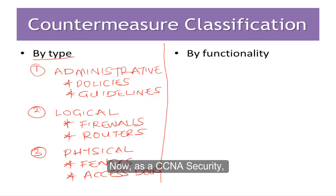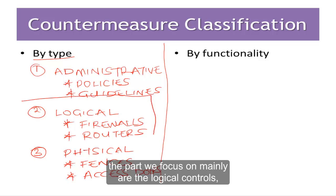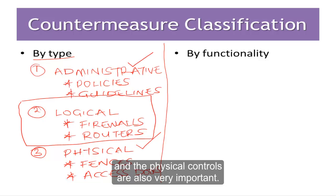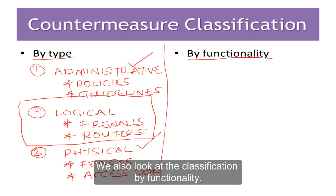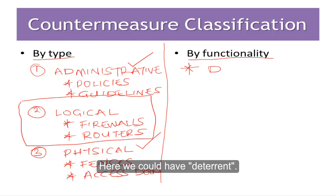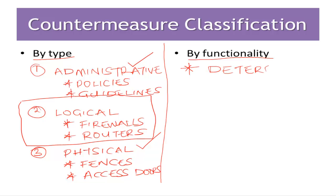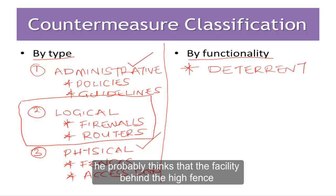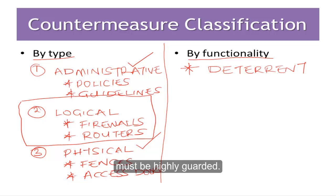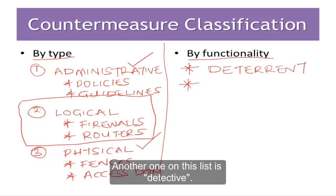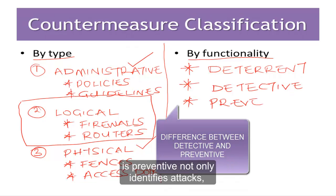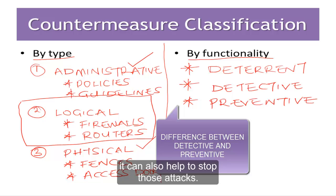As a CCNA security professional, the part we focus on mainly is logical controls, but as you go on in your security journey you will find that administrative and physical controls are also very important. We also classify countermeasures by functionality. Here we have deterrent — this discourages attacks, for example when someone sees a high fence they assume the facility is highly guarded. Next is detective, which helps to identify attacks. Finally, preventive not only identifies attacks but can also help to stop them.